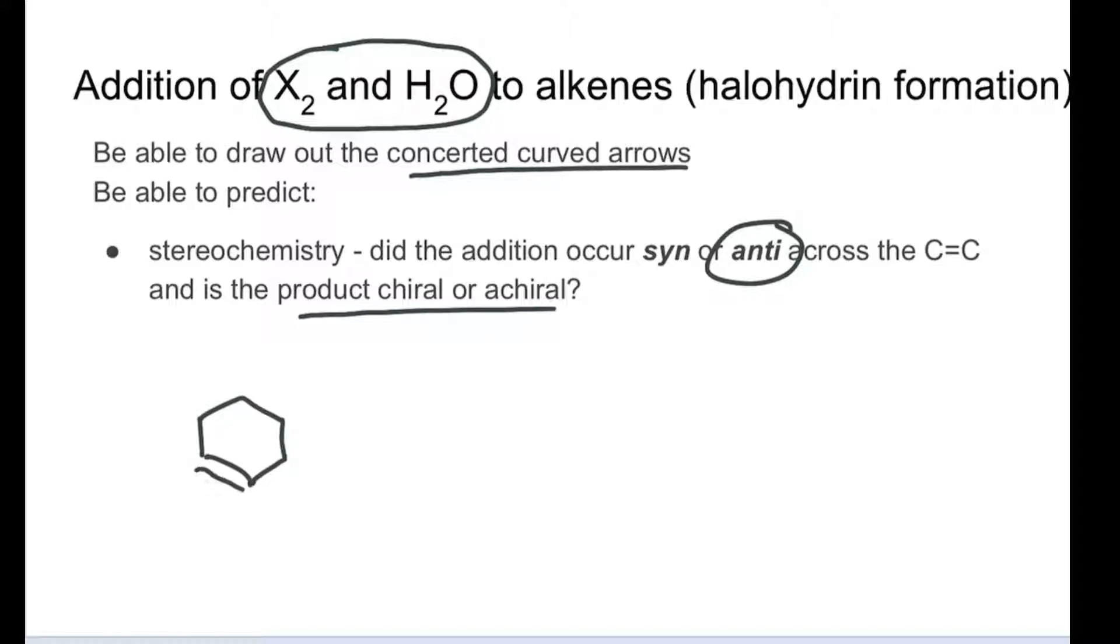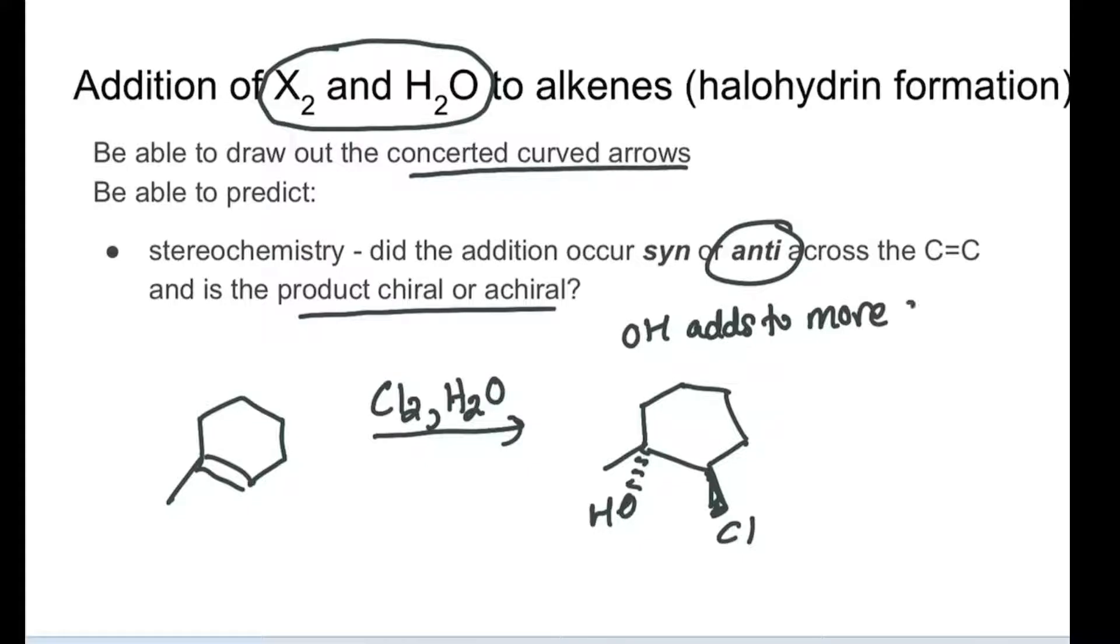When we have a double bond, you'll notice in the reagent set that water is there. We pick up the chlorine or halogen on the less substituted side, and we pick up the OH group on the opposite side. It's anti addition where the OH adds to the more substituted carbon.